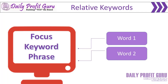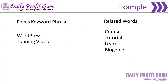I will go through an example. Why do we need this information? We will be using it to name images, we will be using it for content on your blog, and we'll be using it for YouTube videos. There are many places that we're going to be using a focus keyword phrase and relative keywords.